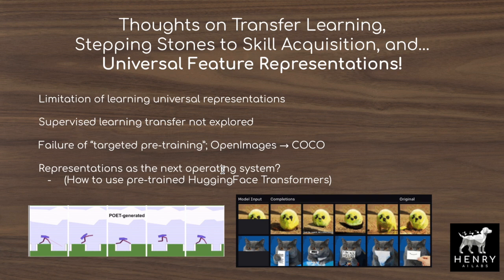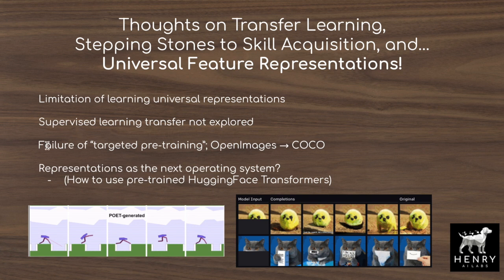We still lack a single universal representation — almost like an operating system — that works as features for all downstream tasks. It's interesting to think about how to fine-tune representations and leverage pre-training and extra data. One inspiring paper is POET, which explores a stepping-stone curriculum where a bipedal walking agent learns to navigate complex terrain. This suggests thinking of training pipelines as chains of tasks — supervised pre-training, self-supervised contrastive learning, generative modeling — to progressively learn better representations.